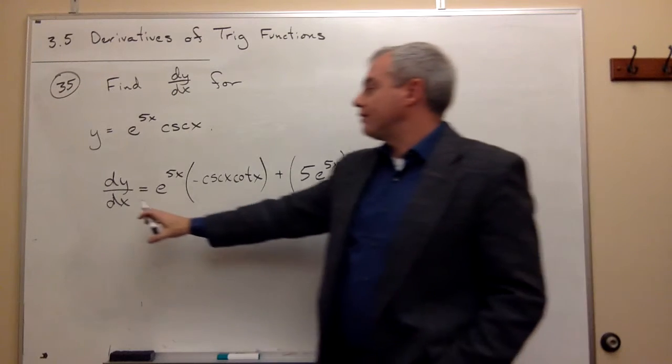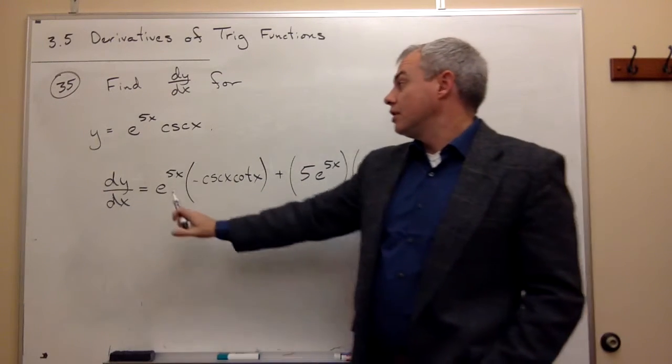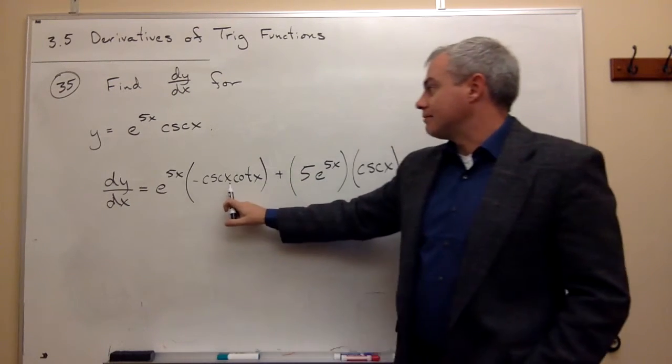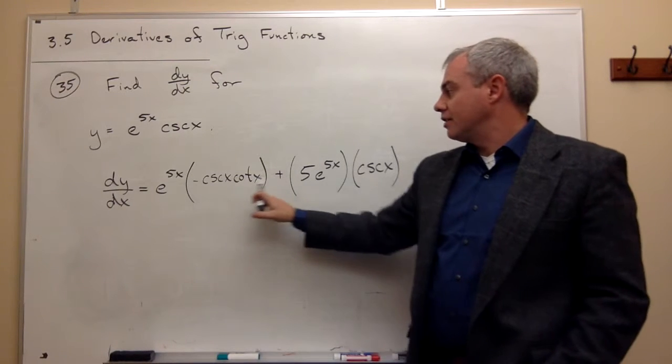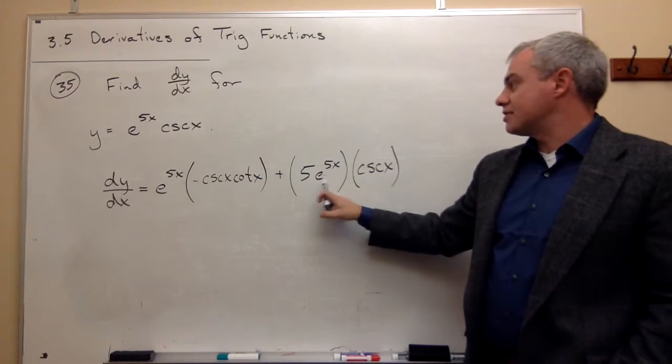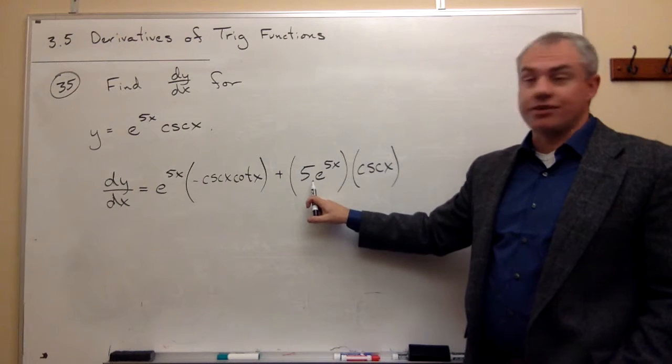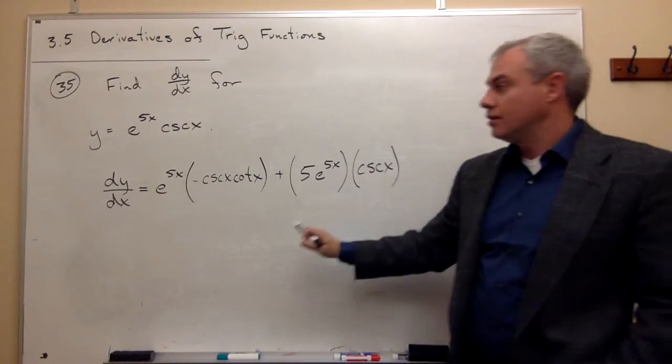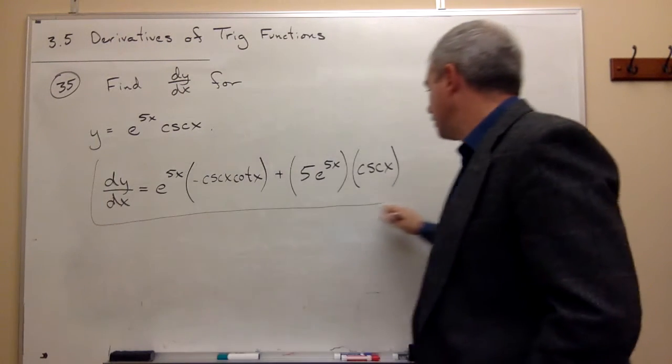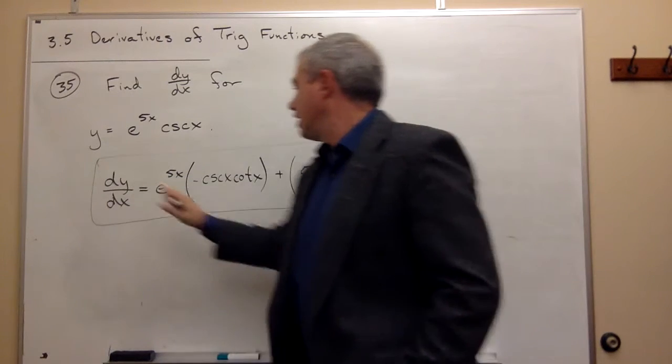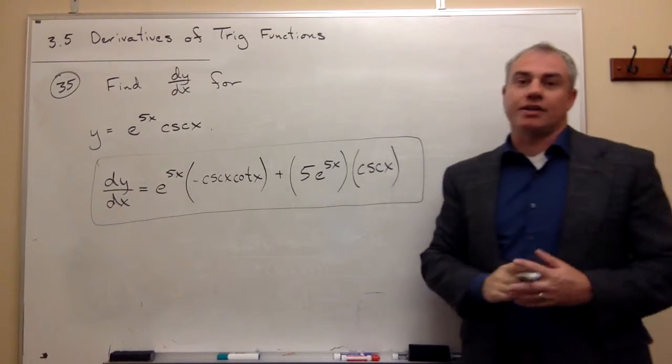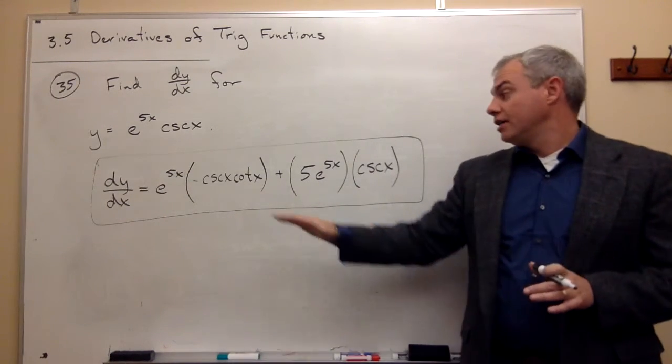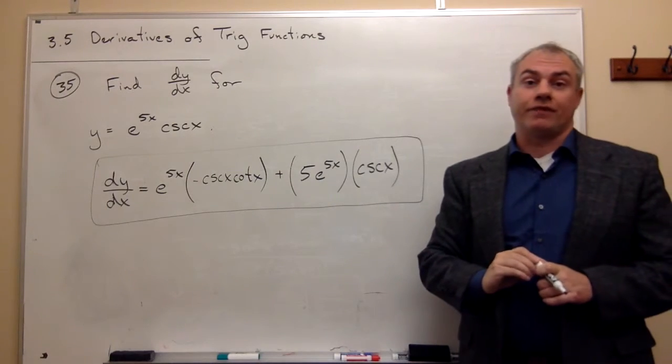All right, so the derivative using the product rule is the first times the derivative of the second plus the second times the derivative of the first, and that's our derivative. If we want to multiply this out and clean it up a little bit, that's fine, but we have found the derivative function.